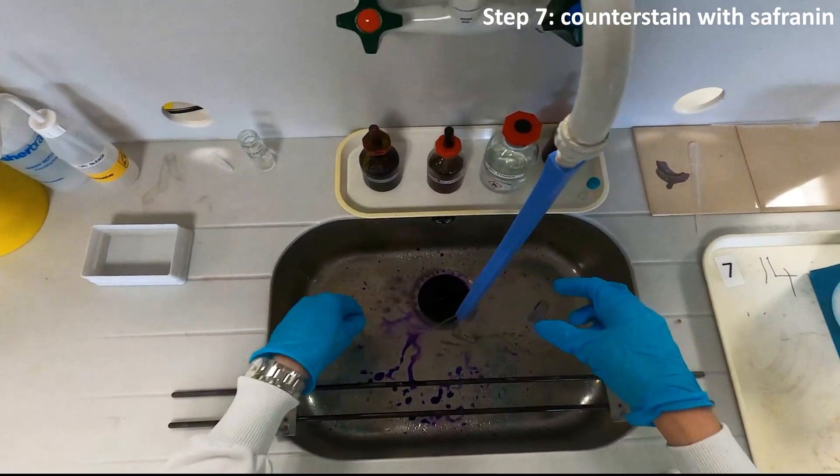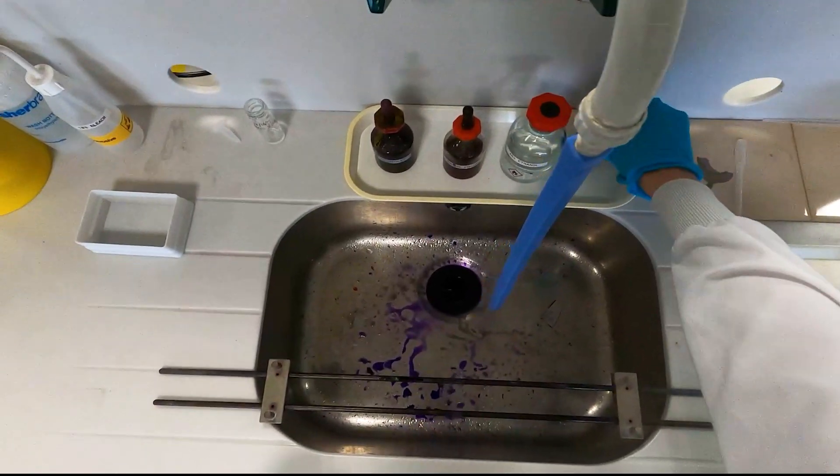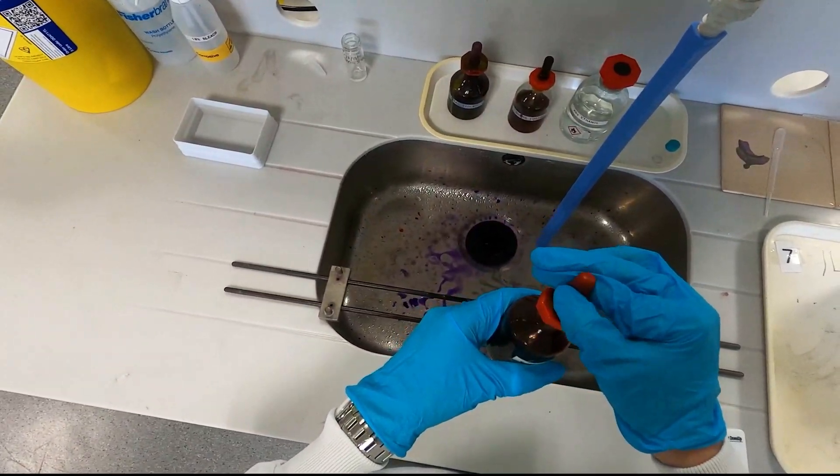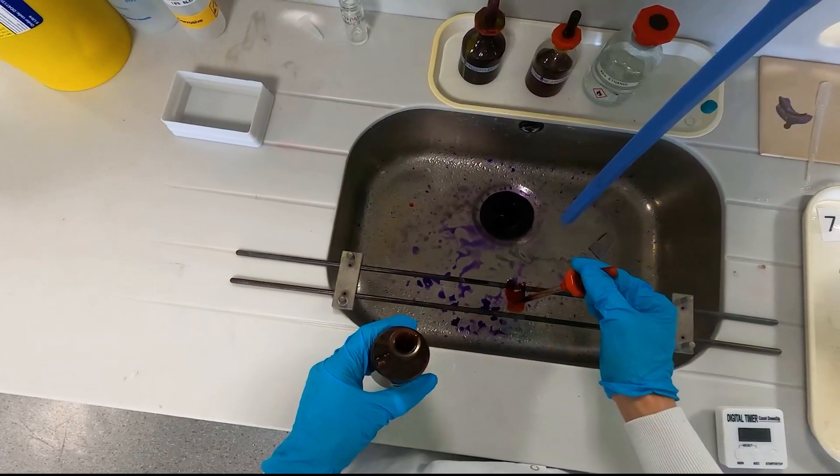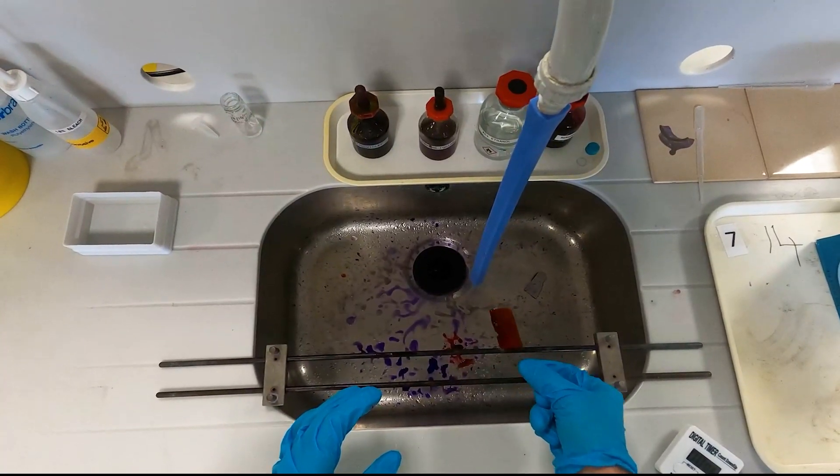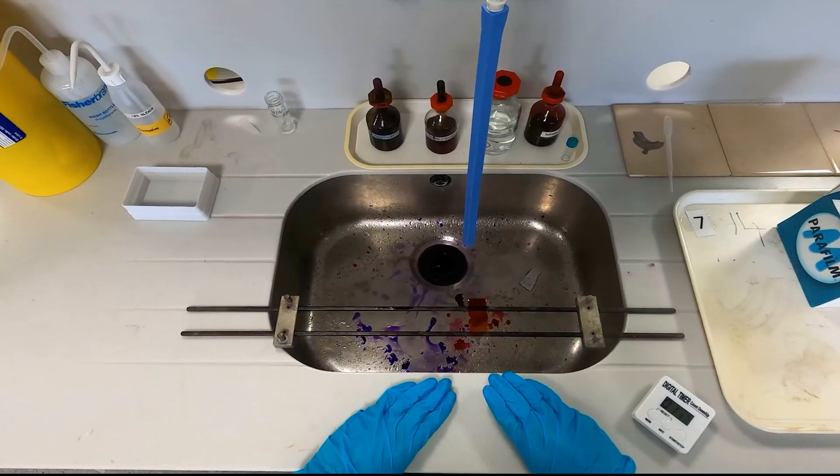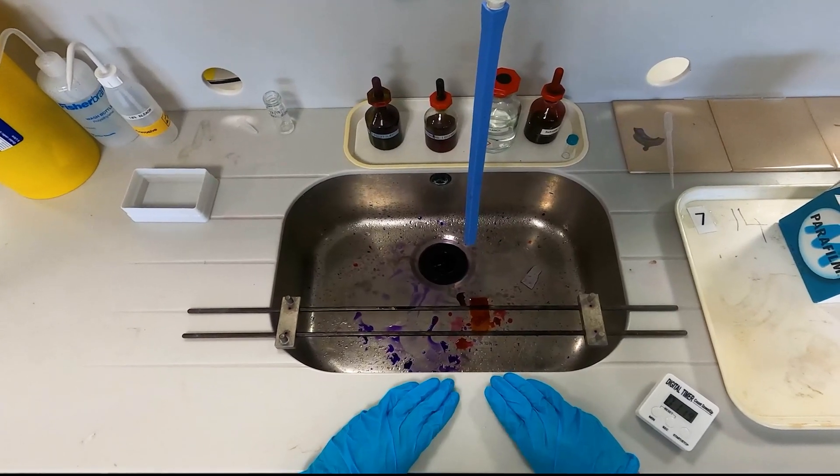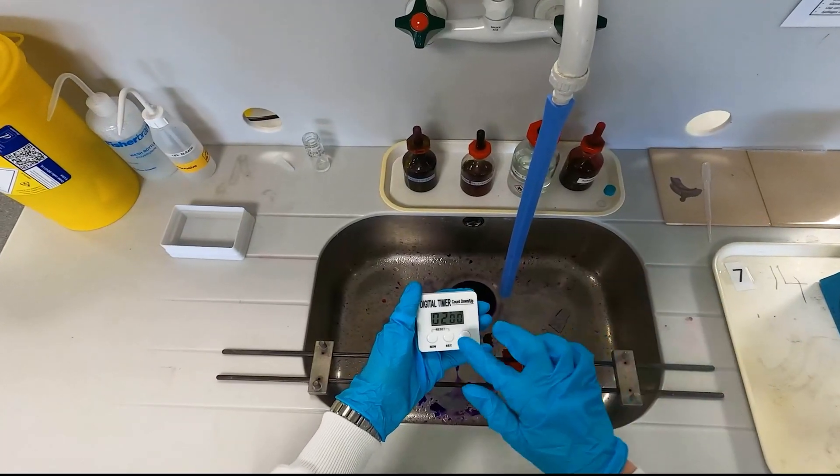Finally add a few drops of your counter stain, safranin. If your bacteria is Gram negative, this stain shows up clear in the crystal violet giving it a bright red or pinkish color, but if your bacteria is Gram positive, the crystal violet will show up clearer and look purple. Now you've just got to wait a very long and very boring two minutes.